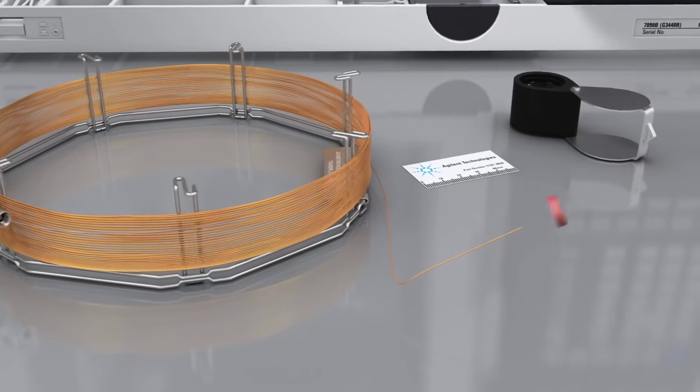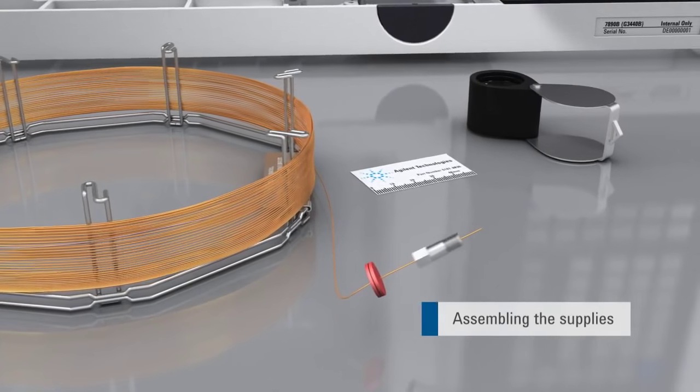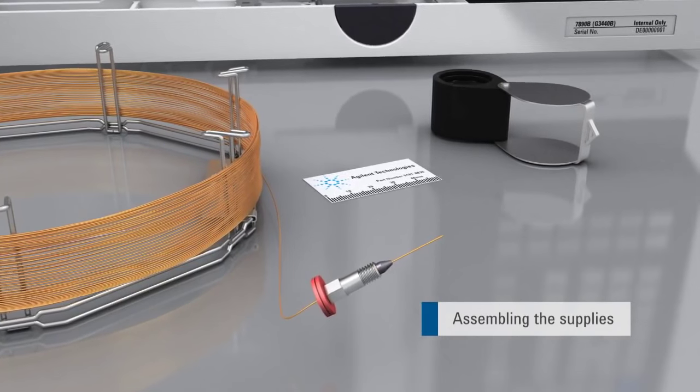Thread the column through an inlet septum and then through a column nut. Choose an appropriate column ferrule and thread column through it.